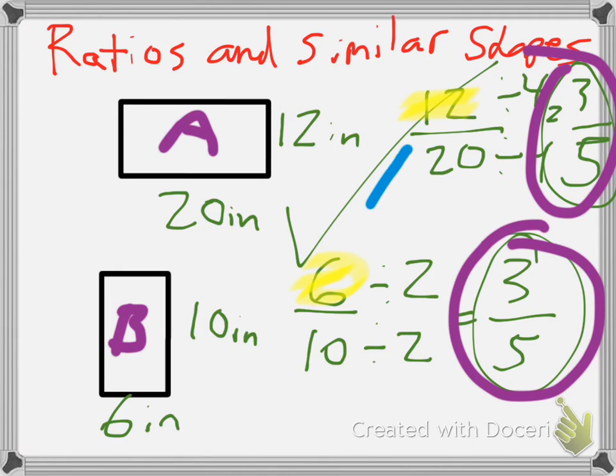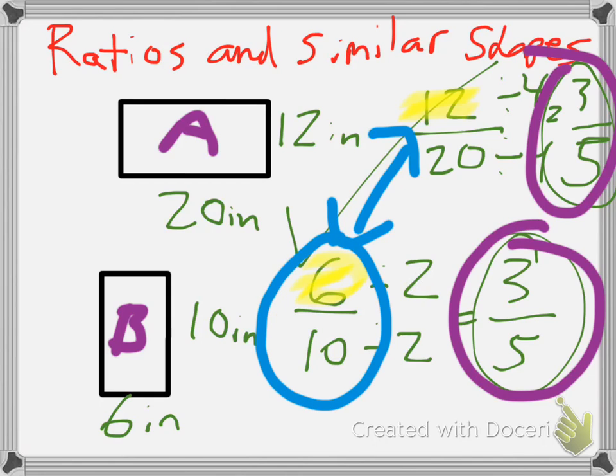I'm going to do that by coming back to my original ratio, 12 over 20, 6 over 10. All I have to do is think how did I get from 6 over 10 to 12 over 20, and most of us are going to recognize that I multiplied 6 by 2 to get 12 and 10 by 2 to get 20. So my scale factor in this case would be 2.